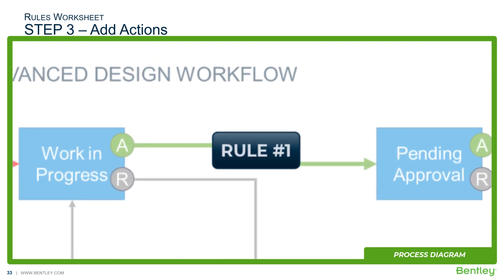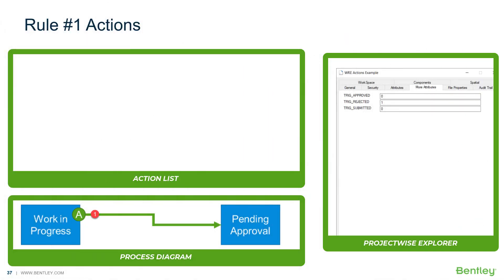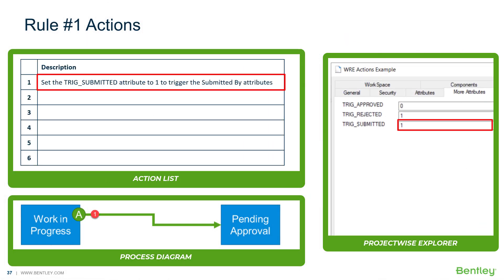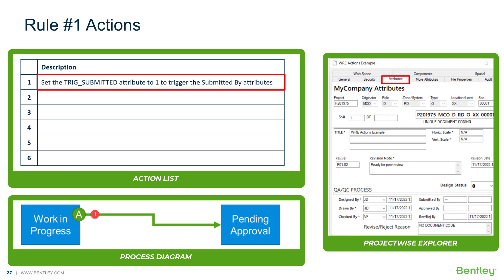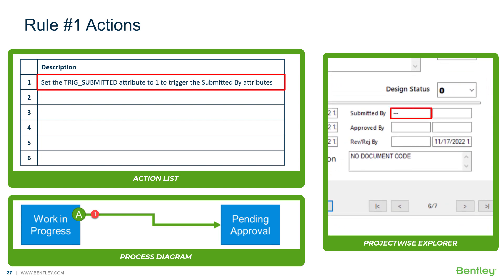Looking at the process diagram, we see that there is simply a state change to pending approval for rule number one. However, from the prototype, we know that certain attributes need to populate and clear as well. The first step is to set the trig submitted attribute to one to trigger the submitted by attributes. Hopping over to the attributes tab, we see that the trig submitted change triggers the submitted by update by using a stored procedure to fill in the current user's title block name.